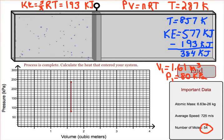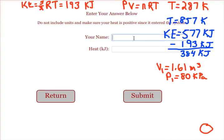When you're ready to test your answer, simply click on the end button, type in your name, and type in the number of kilojoules and hit submit.